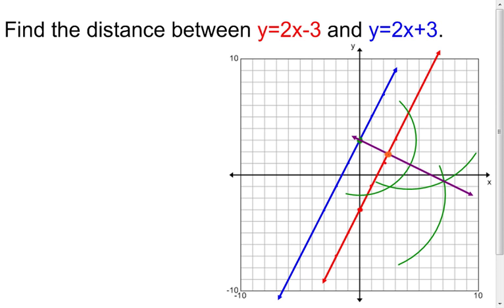The intersection point doesn't fall on a nice integer value, so I'm going to approximate. Coming over to the right, it looks like about 2.3. Going up, approximately 1.8. So the intersection is at approximately 2.3, 1.8. I also have my original point at 0, 3. I need to find the distance between those two points, and then I've found the distance between my two lines.